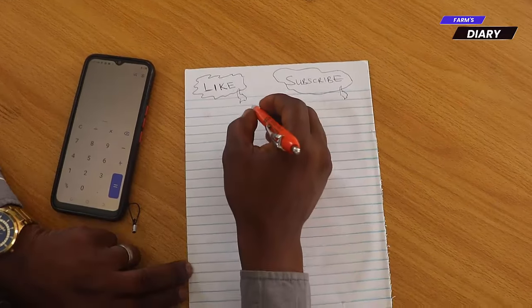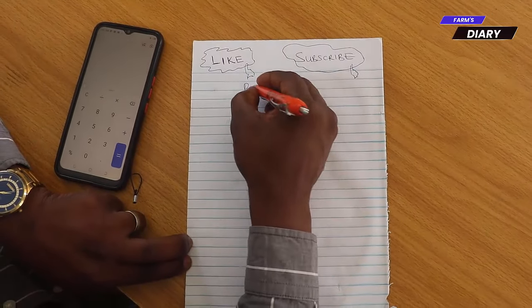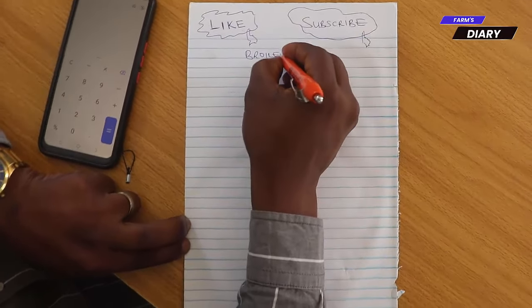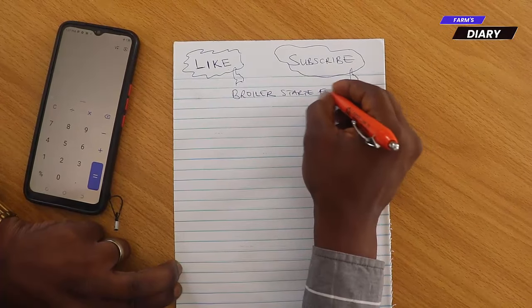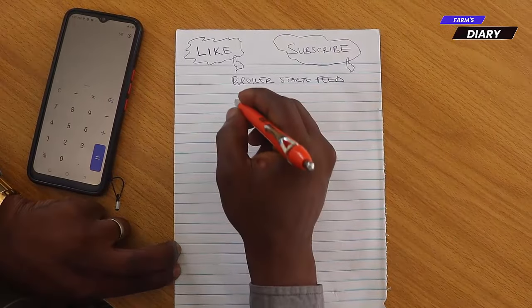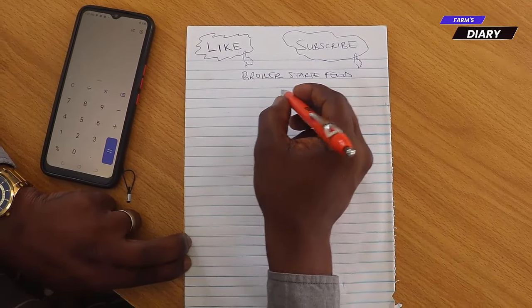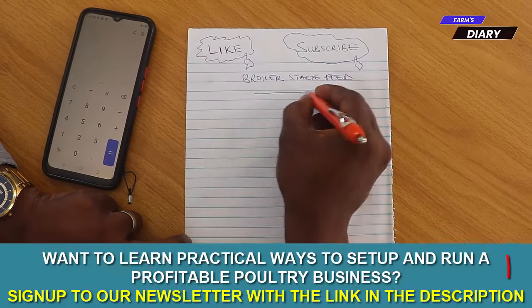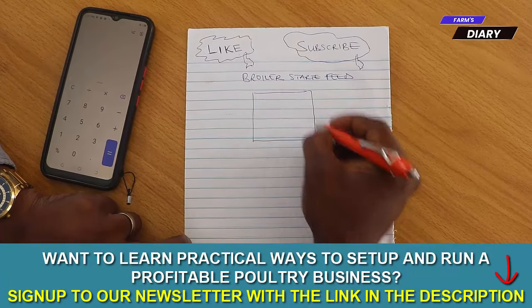We are going to be teaching you how to personally formulate your own broiler starter feed. And, you know, in the past, and even sometimes currently, we employ what we call the Pearson Square Method. And that Pearson Square Method, you know, is now obsolete. We are not using it again because we are no longer doing complex feed formulation.